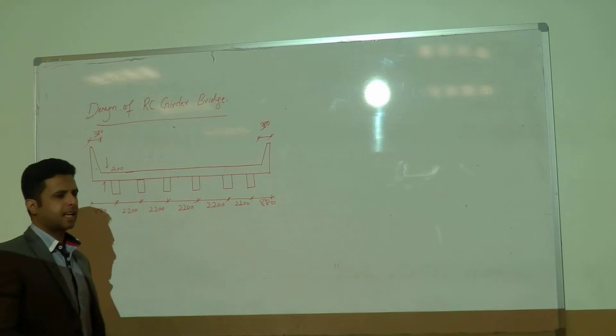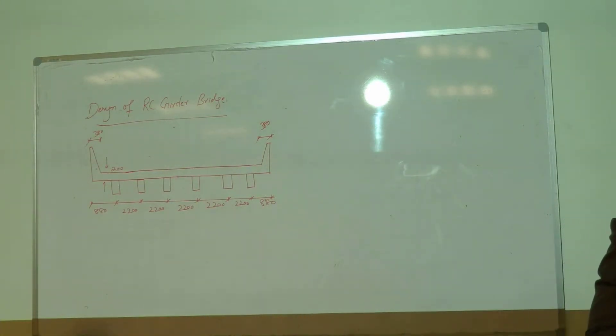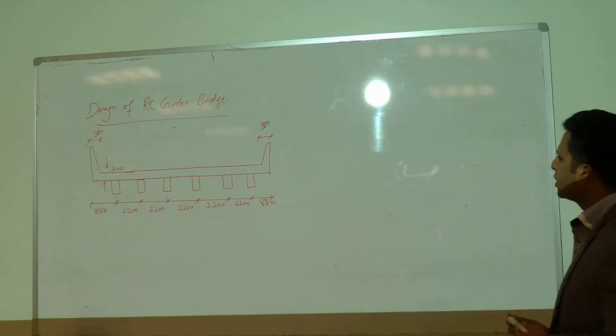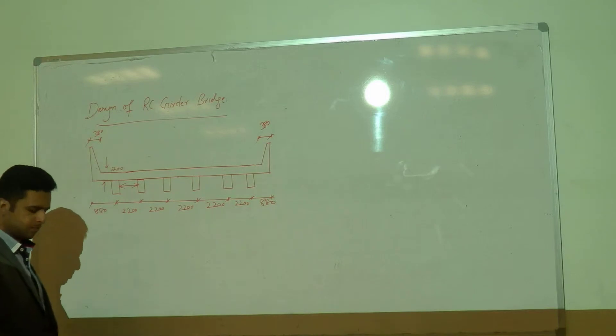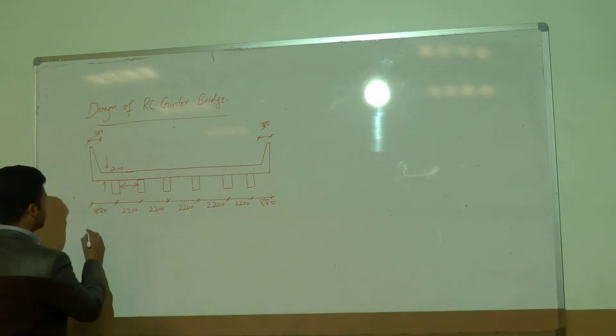We have decided the thickness of slab in our previous class. And now we are going to check certain conditions for empirical method. And if those conditions are satisfied, we are going to use the reinforcement given by that empirical method. The first condition is that effective span should be less than or equal to 4100. The clear span between the girders.